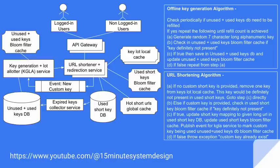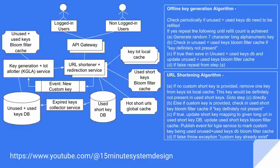For the URL shortening algorithm: if no custom short key has been provided by the user, we can quickly remove one key from the key-lot local cache — this key is definitely not present in the used short keys since it was provided by the KGLA service, so we can directly proceed to save the mapping. But if a custom key is provided, we need to check in the bloom filter cache if this key does not exist. If it does not exist, we update the mapping in the DB and the bloom filter cache, and publish an event for the KGLA service to mark this custom key as used in the unused plus used keys DB and its bloom filter cache. If the key exists, we throw an exception to the user: 'This custom key already exists, please provide a new key.'